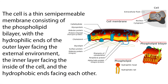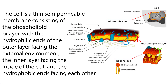The cell or plasma membrane is a thin, semi-permeable membrane consisting of the phospholipid bilayer, with the hydrophilic ends of the outer layer facing the external environment, the inner layer facing the inside of the cell, and the hydrophobic ends facing each other.